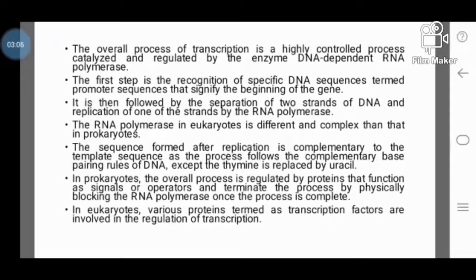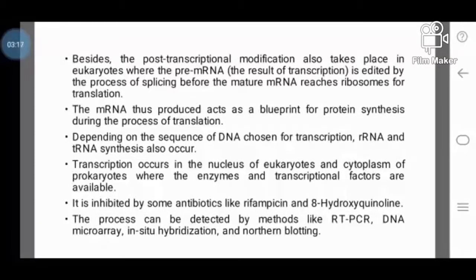In eukaryotes, various proteins termed as transcription factors are involved in the regulation of transcription. The post-transcriptional modification also takes place in eukaryotes, where the pre-mRNA, the result of transcription, is edited by the process of splicing before the mature mRNA reaches ribosomes for translation. The mRNA thus produced acts as a blueprint for protein synthesis during the process of translation.